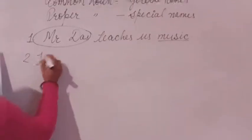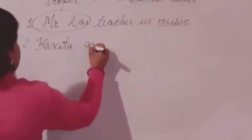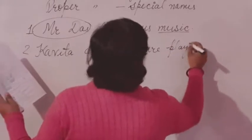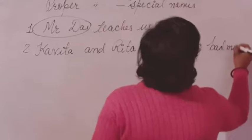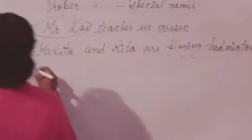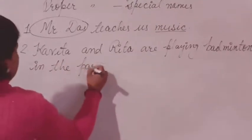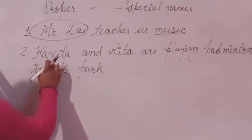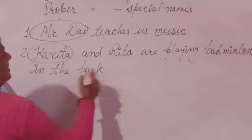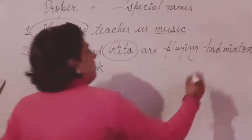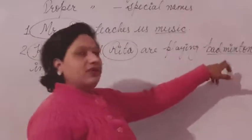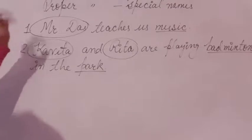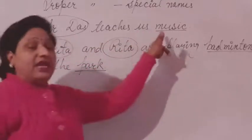The second sentence is: 'Kavita and Rita are playing badminton in the park.' Kavita is a specific name, so it is a proper noun — we put a circle on it. Rita is also a proper noun. But 'badminton' is the general name of a game, so we underline it. 'Park' is also underlined. In this way, you will complete this exercise — circle the special names and underline the general names.